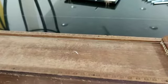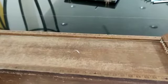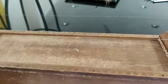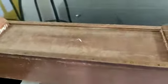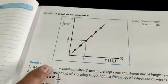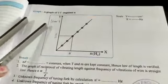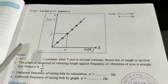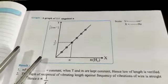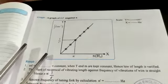In this way we can take 5 readings and verify the equation NL equals constant. By drawing the graph of N versus 1 upon L, with frequency on the x-axis and 1/L on the y-axis, we get a straight line passing through the origin. This proves that N is directly proportional to 1/L, or equivalently, N is inversely proportional to L.